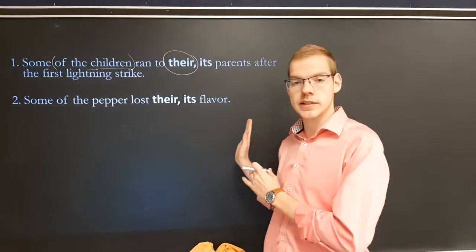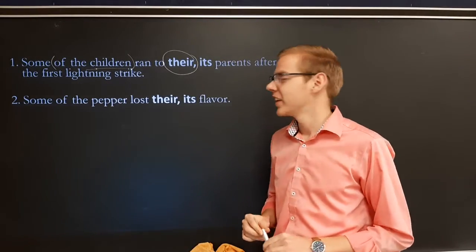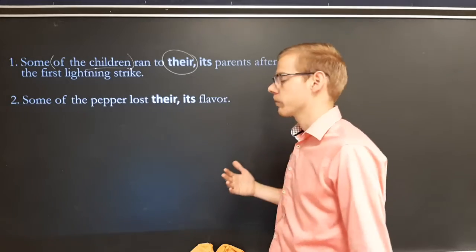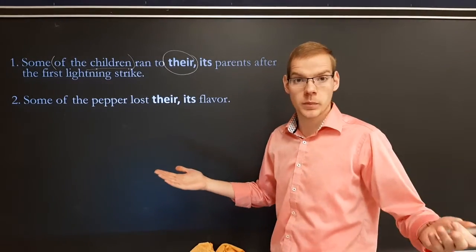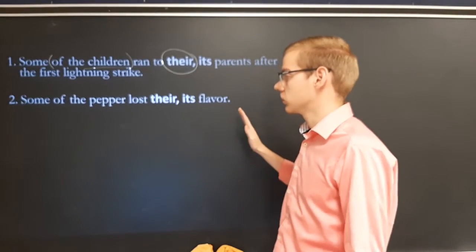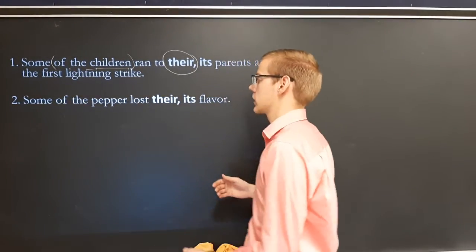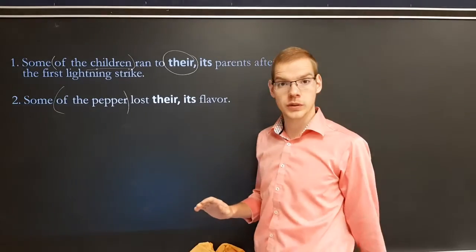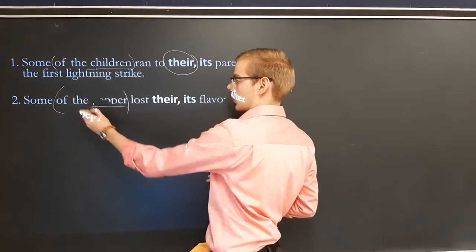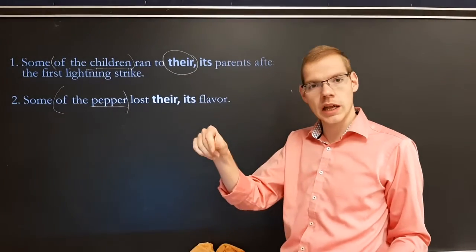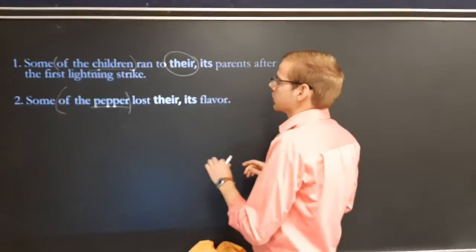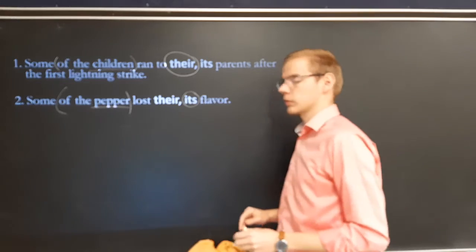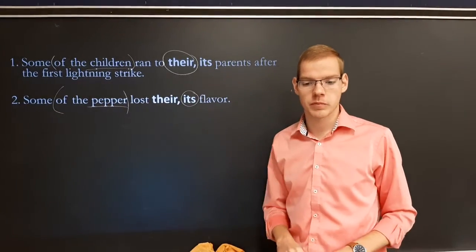Let's do the second example as well — these are not number one and two in the book, just examples. Number two: 'Some of the pepper lost their or its flavor.' Some of these you can figure out from how we normally speak, but sometimes not. Put parentheses around the prepositional phrase: 'of the pepper.' Pepper is singular, even though there are a lot of grains. So, 'some lost its flavor' — since it's singular, it'd be 'its.' This is what we'd be doing on numbers one to five.